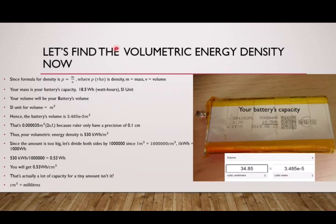As some of you might know, batteries can go as high as a few hundred watt-hours per liter. Per liter, this works out to 530 watt-hours per liter. If we find per liter, we multiply this by a thousand and this by a thousand, and you get around 530 watt-hours per liter.